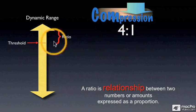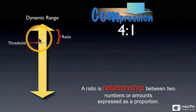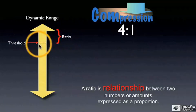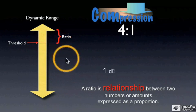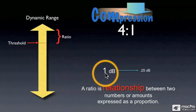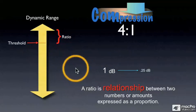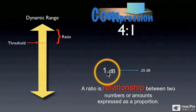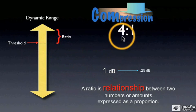if you have a signal that is one decibel above the threshold, at a ratio of four to one, that one decibel will be expressed on the other side of the compressor as a quarter of a dB.